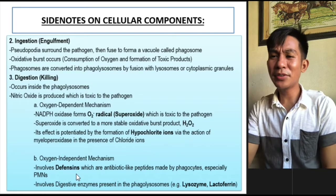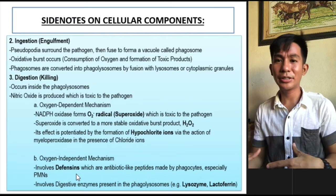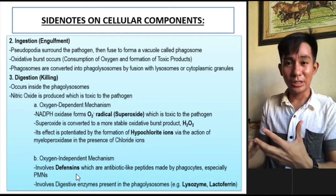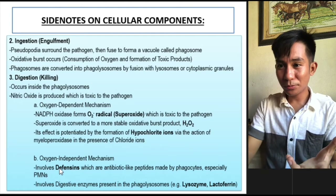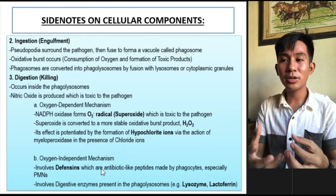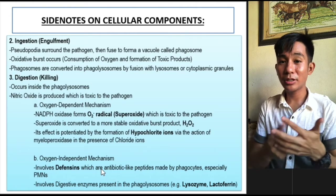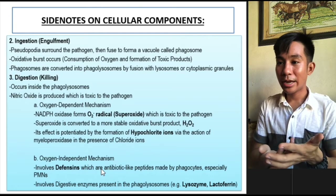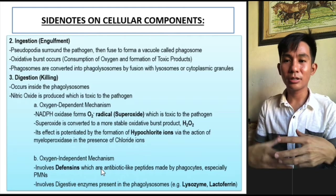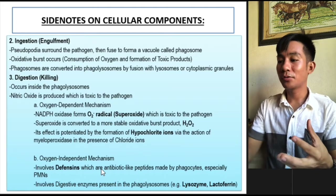We also have the oxygen-independent mechanism. From the term itself, it does not utilize oxygen. These include defensins — natural antibiotic-like peptides made by phagocytes, especially polymorphonuclears — and enzymatic digestion like lysozymes and lactoferrin.